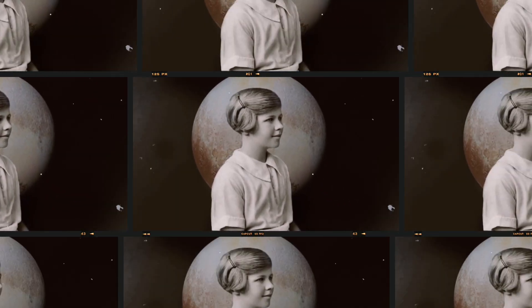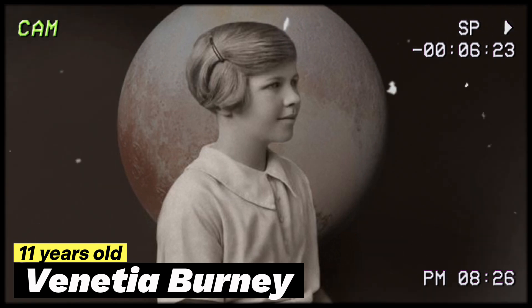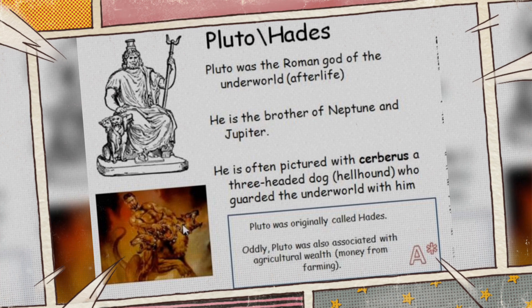The origin of the name Pluto adds a fascinating layer to the story. Contrary to scientific tradition, an imaginative 11-year-old named Venetia Burney from Oxford, England coined the name. She proposed it to her grandfather, who forwarded it to Lowell Observatory. The choice of Pluto pays tribute to the Roman god of the underworld, aligning intriguingly with Percival Lowell's initials.